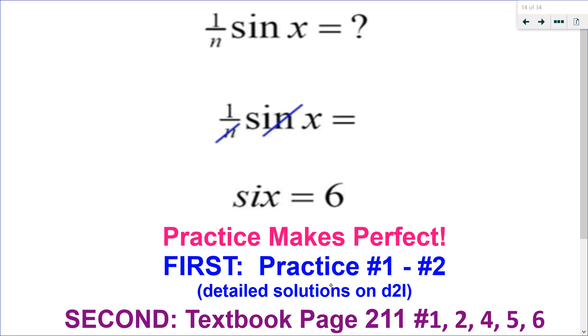Here's a unique — and incorrect — way of solving an equation that I do not want you to do: taking (1/n)·sin(x) = something, canceling out the n's, and claiming the answer must be 6. That kind of illegal cancellation is not valid.